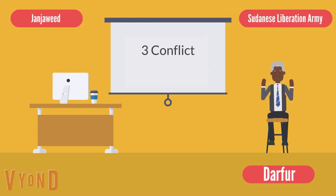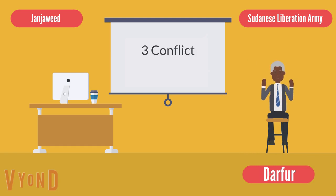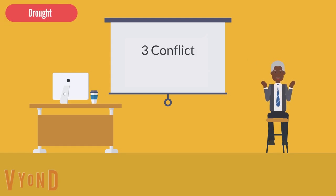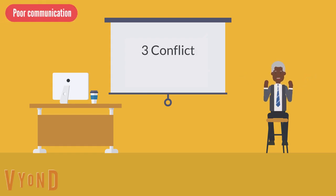A case study is the Darfur conflict in Sudan. The causes of that were, firstly, the ethnic hatred between the Arabs with the Janjaweed and the non-Arabs with the Sudanese Liberation Army. The government supported the Arabs. It was made worse by a drought, which meant the nomadic Arabs moved onto the land of the non-Arabs. The Janjaweed, supported by the government, burned down their villages and stole their food. Poor communications links meant nobody, like the United Nations, heard about the conflict until it was too late.